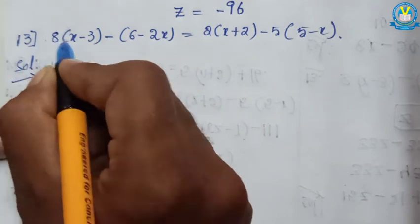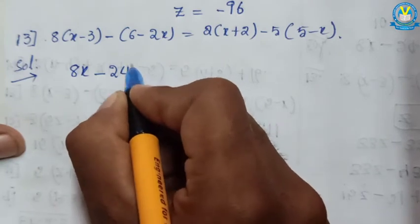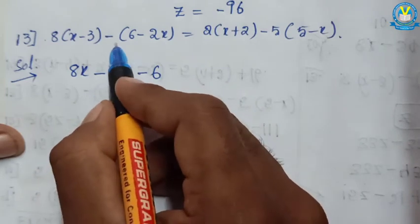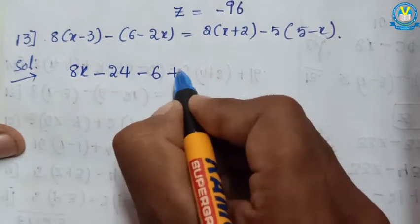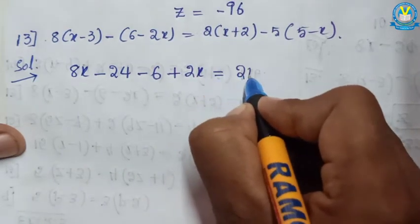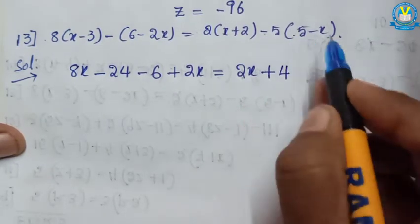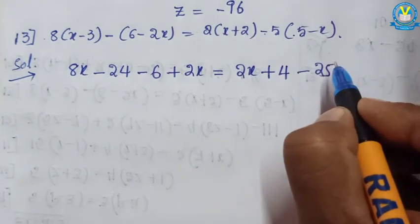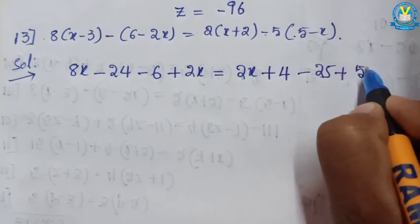8x plus into minus gives minus 8 into 3 gives 24; minus into plus gives minus 1 into 6 gives 6; here there is no value so 1 is there, minus into minus gives plus 1 into 2x gives 2x; plus into plus gives 2 into x gives 2x; plus 2 into 2 gives 4; minus into plus gives minus 5 into 5 gives 25; minus into minus gives plus 5 into x gives 5x.